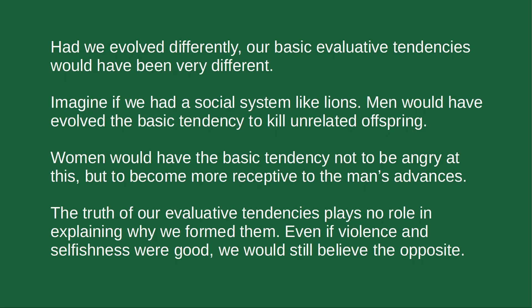Street gives a few examples. Suppose we had evolved a social system more like lions. Male lions tend to form polygynous harems with lots of females. Males experience the basic tendency to kill offspring that are not their own, and females have the basic tendency to become more receptive to a male's advances even after he kills her offspring. Imagine if humans had developed a social system like this — our moral judgments would likely differ pretty significantly.